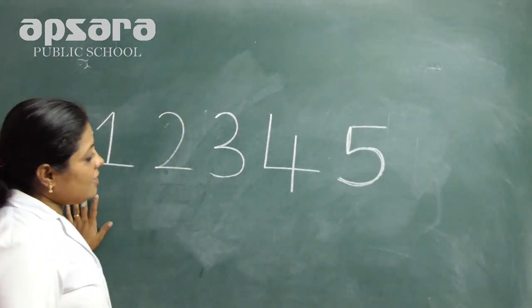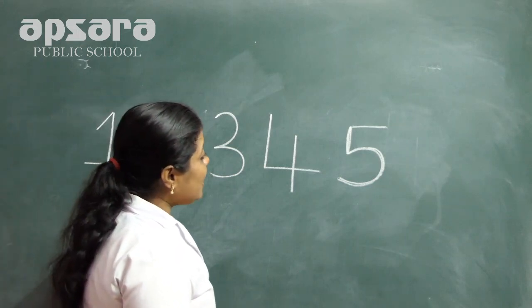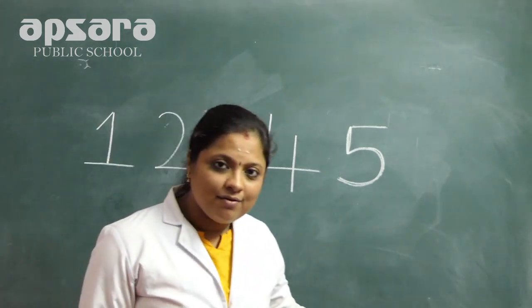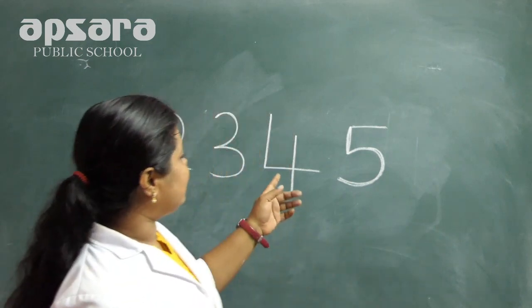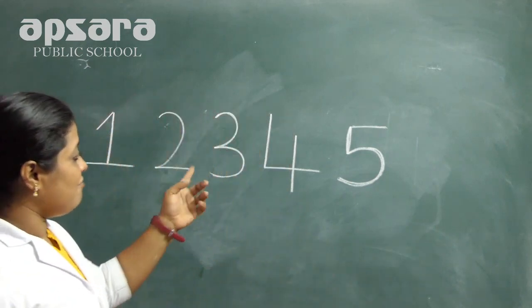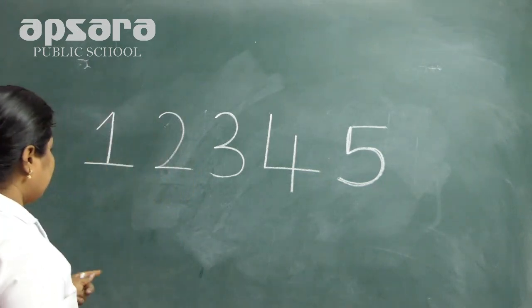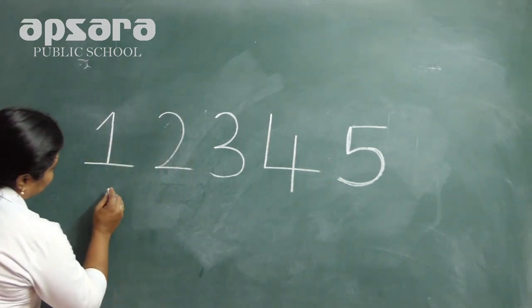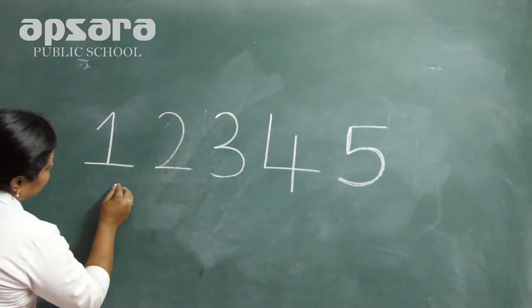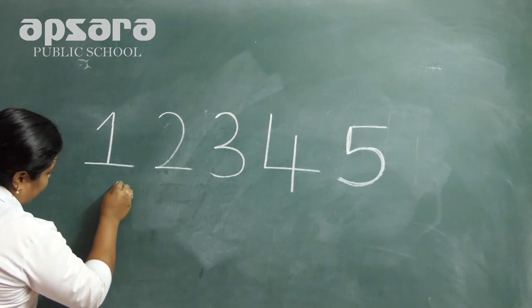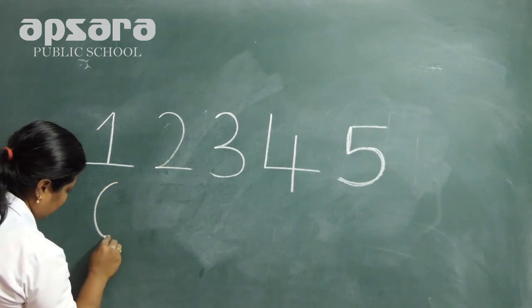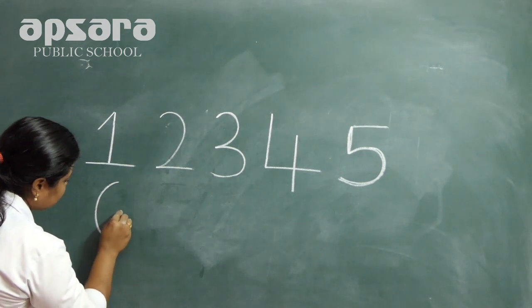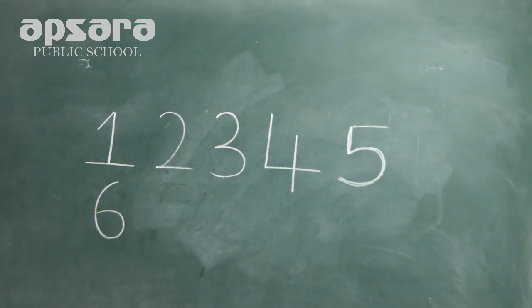And children, which number comes after five? Six. Listen carefully. A curve, join into a curve — it makes number six.